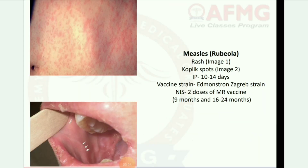Next image: measles and rubella. First image shows rash; second image shows Koplik's spots. Incubation period: 10 to 14 days. Vaccine strains: Edmonstone and Zagreb strain. NIS: 2 doses of MR vaccine at 9 months and 16 to 24 months.